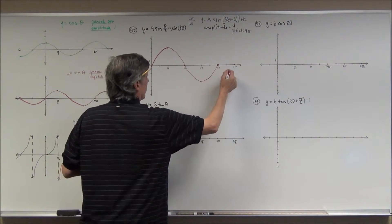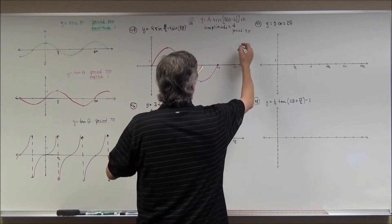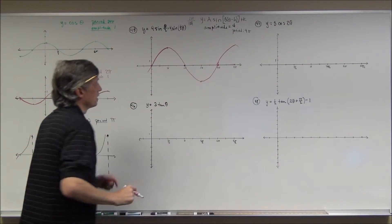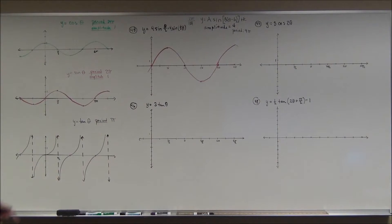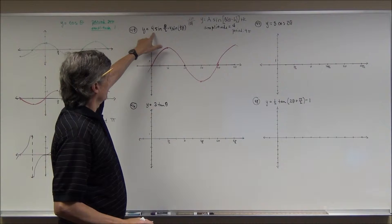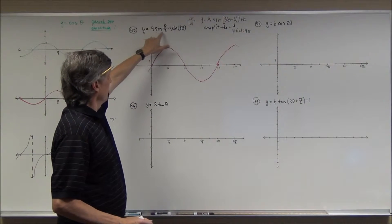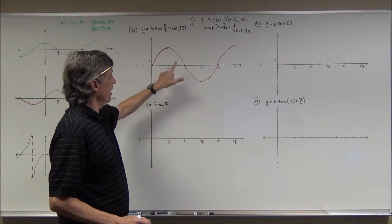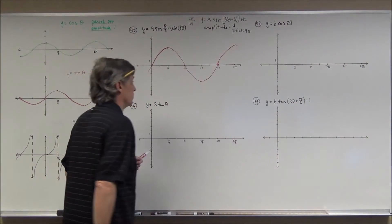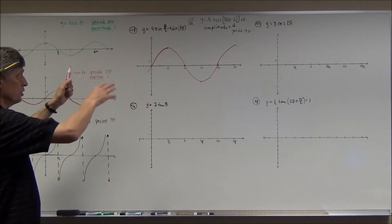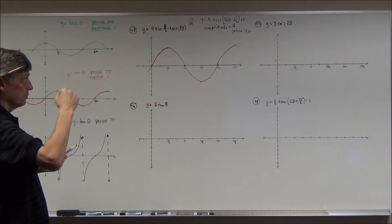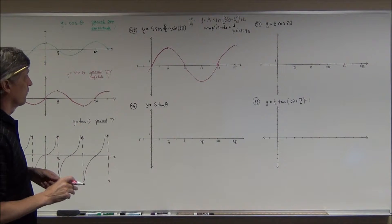Definitely use a pencil so mistakes can be fixed. The graph continues this pattern, and he's probably only going to want one complete period. Notice I do the stretches and shrinks — the dilations, the vertical and horizontal stretch and shrink (amplitude and period) — first. If I have translations like in problem 48, I first graph the stretches and shrinks, then translate it, making two graphs and erasing the first one.